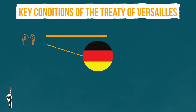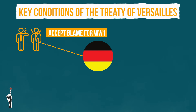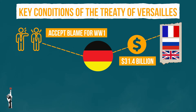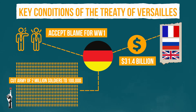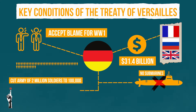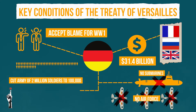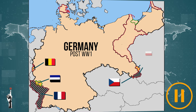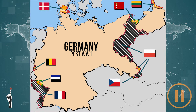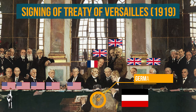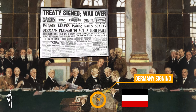Germany had to accept the blame for the start of World War One. It had to pay 31.4 billion dollars in compensation to the Allies — that's over 400 billion dollars in today's value. Germany had to cut its army from almost 2 million men to only 100,000 men; no submarines were allowed and no air force was allowed. Germany had to lose a significant amount of land and all the colonies they possessed. The treaty was drafted mainly by France, Britain, and the United States, and Germany was forced to sign it.